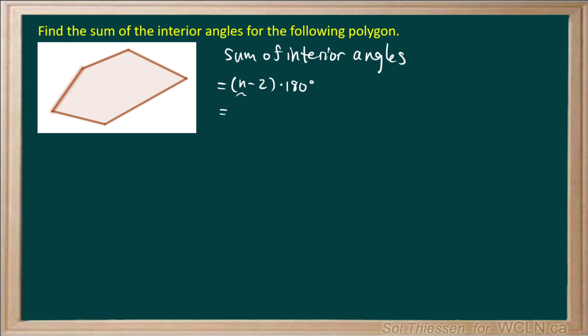Here, n is the number of sides that the polygon has, and the interior angles are the angles on the inside of the polygon at each vertex.